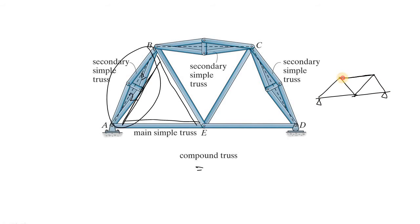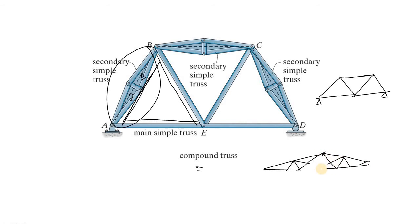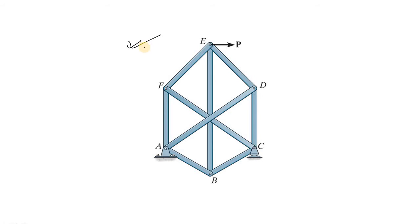If you form a truss like this — let's say this is one truss, this is another truss, and this is another truss — and if you connect them by this member, then this whole truss belongs to the compound truss category. Now, what is a complex truss? A complex truss looks like this, where neither a simple truss nor a compound truss exists. This is known as a complex truss.